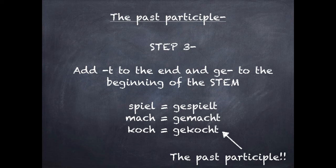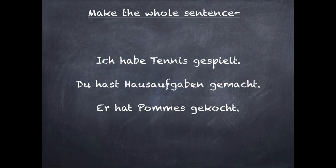And that is the past participle — it's not too difficult. To make a whole sentence, we combine the haben conjugation with the past participle sent to the end. So: ich habe Tennis gespielt — I have played tennis; du hast Hausaufgaben gemacht — you have done homework; er hat Pommes gekocht — he has cooked chips.